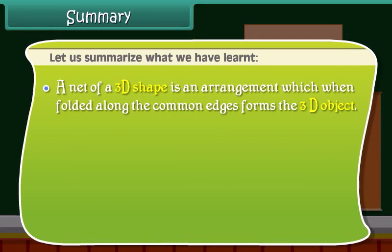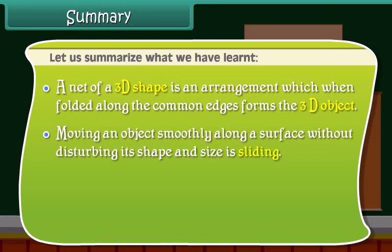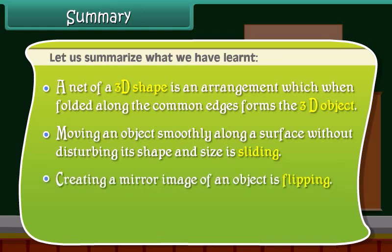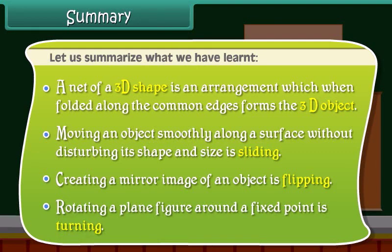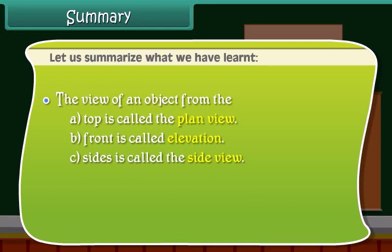A net of a 3D shape is an arrangement which, when folded along the common edges, forms the 3D object. Moving an object smoothly along a surface without disturbing its shape and size is sliding. Creating a mirror image of an object is flipping. Rotating a plane figure around a fixed point is turning. The view of an object from the top is called the plan view.